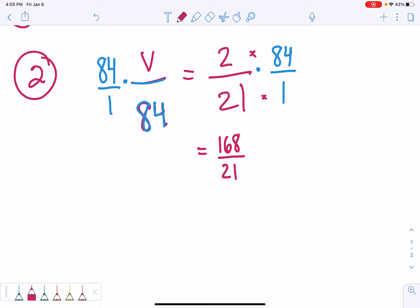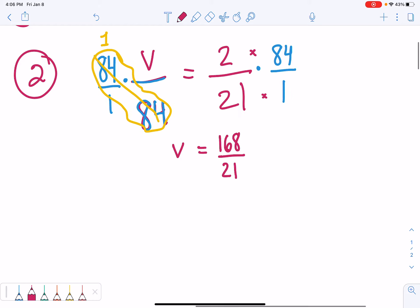On the left side, remember, 84 divided by 84 equals 1. So, all we're left with is v. V equals 168 divided by 21. So, our next step is to divide by 21, and we get 8.